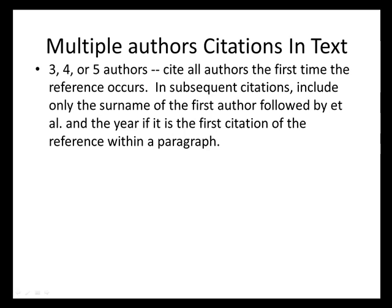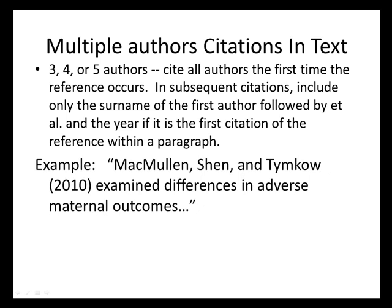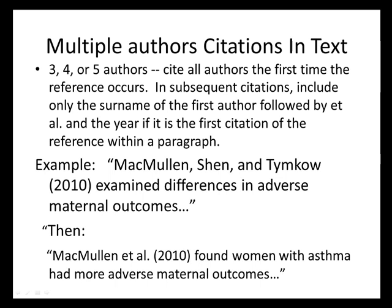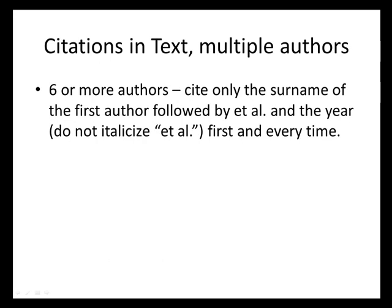Multiple authors, citations in text: for three to five authors, we cite all the authors the first time the reference occurs. In subsequent citations, we only need to use the surname of the first author, followed by et al. and the year if it is the first citation of the reference within a paragraph. Note that ET is ET space AL period — it is not in italics and not underlined. For example, McMullen, Shen, and Timko would be cited in full with the date in parentheses the first time, but subsequently just McMullen et al. and the date.